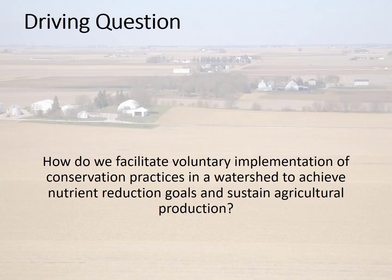The USDA has a history of providing technical assistance for planning and implementation of conservation practices on farms, done in partnership with locally led conservation districts. This approach has been successful over a number of decades. What we've done with the ACPF is aimed to build on that success at the small watershed scale by providing a consistent database of information and tools that help planners and farmers make technically sound conservation decisions for any given field within a watershed context, which considers landscape features upstream and downstream.